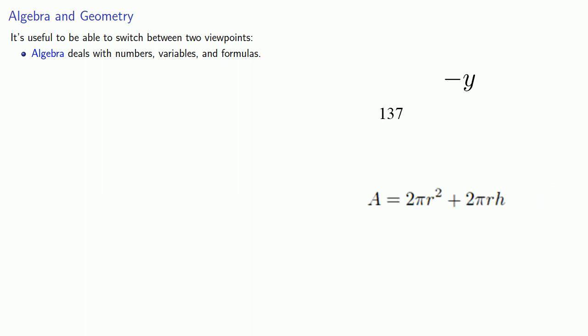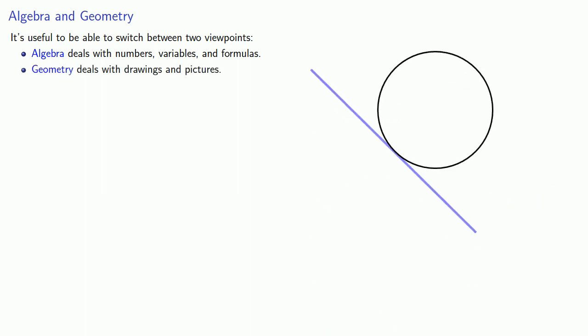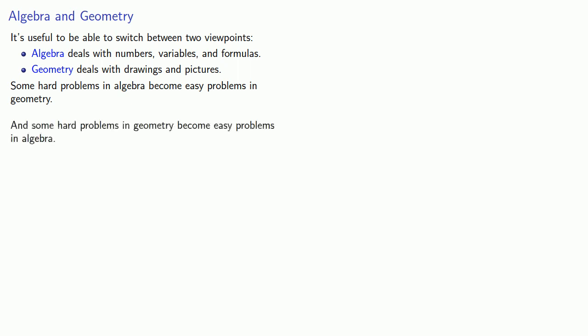This is centered around a more general idea. It's useful to be able to switch between two viewpoints. Algebra deals with numbers, variables, and formulas, while geometry deals with drawings and pictures. And the significance of this is that some hard problems in algebra become easy problems in geometry, and some hard problems in geometry become easy problems in algebra.